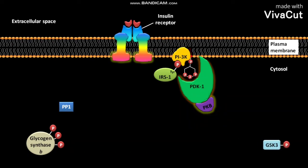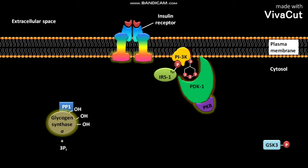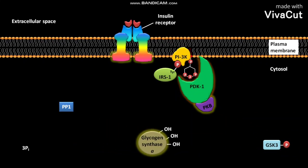This inactivation of GSK3 allows the inactive glycogen synthase B to bind to an enzyme called PP1. PP1 then catalyzes a dephosphorylation reaction in which the inactive glycogen synthase B is converted to active glycogen synthase A and 3Pi. The active glycogen synthase A and 3Pi are then released from PP1. In this way, insulin stimulates glycogen synthase A.